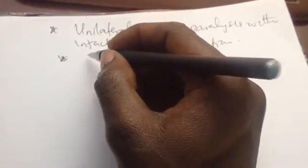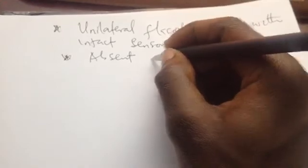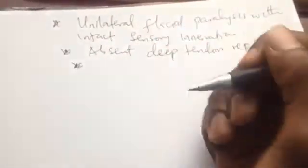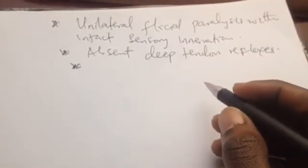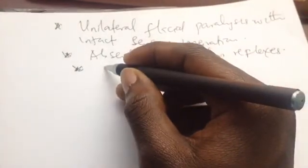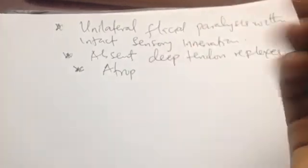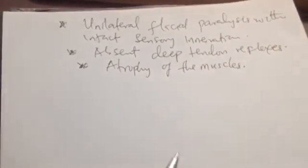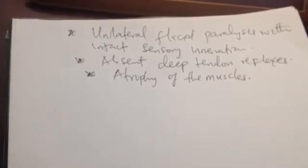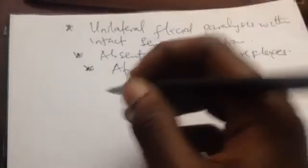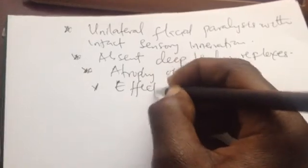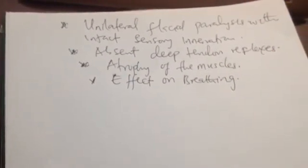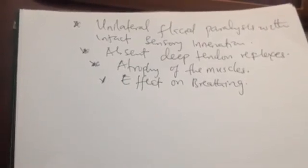The symptoms of spinal paralytic polio include: unilateral flaccid paralysis — mostly unilateral, though bilateral can occur — with intact sensory function of the area, since only the anterior horn is affected, not the posterior. The patient also has absent deep tendon reflexes. Due to denervation, the muscles cannot function, leading to denervation atrophy or disuse atrophy. If intercostal muscles are involved, the patient's breathing will also be affected.